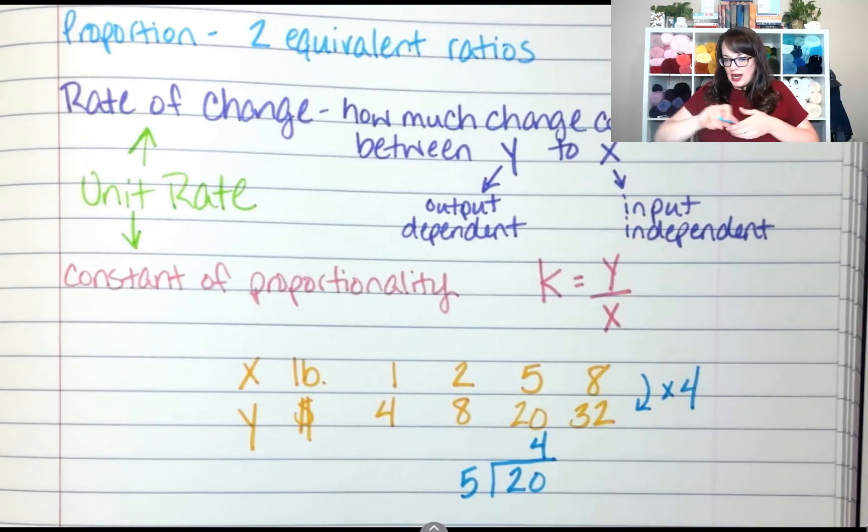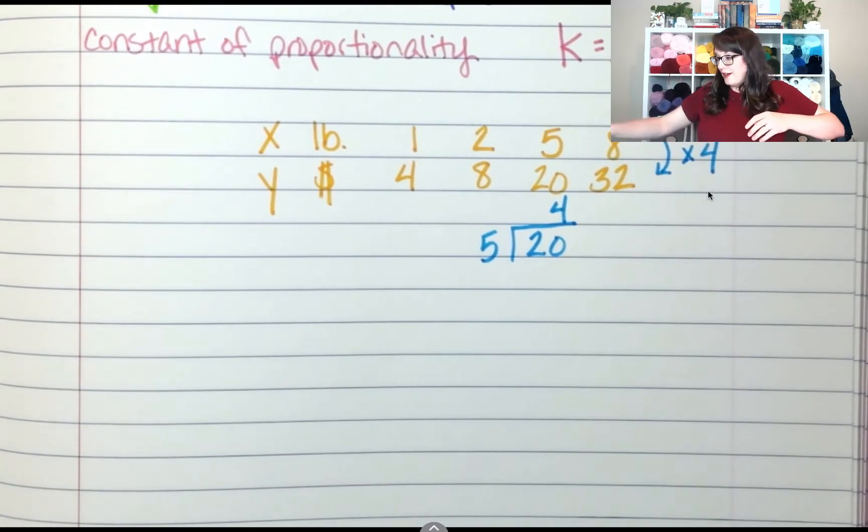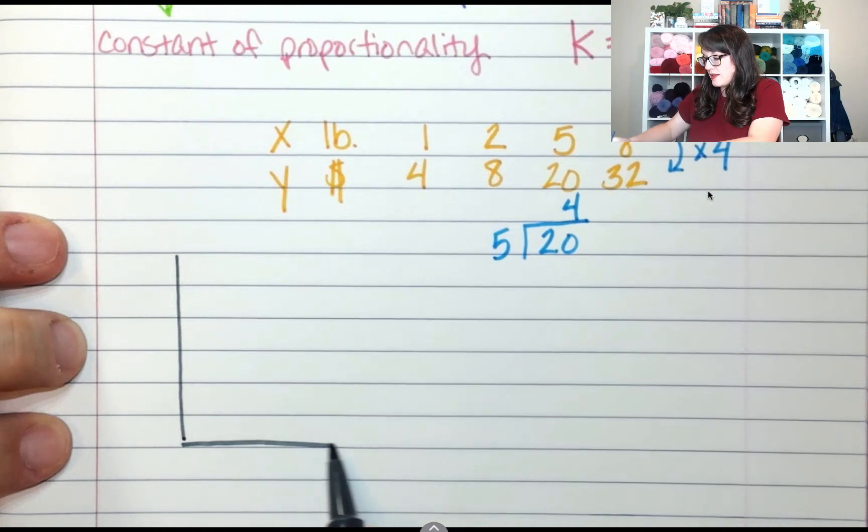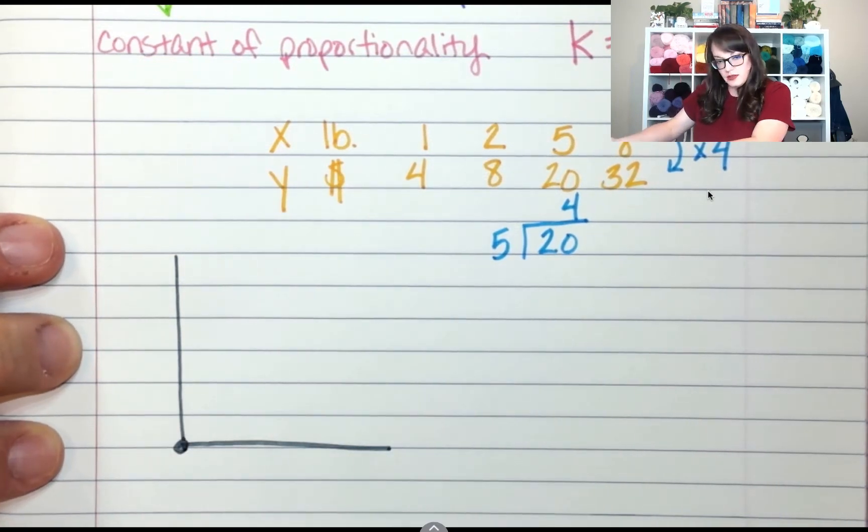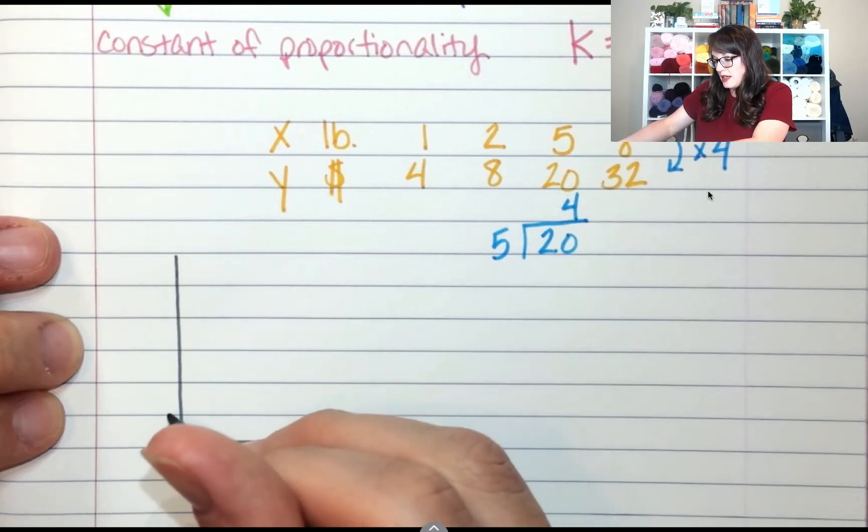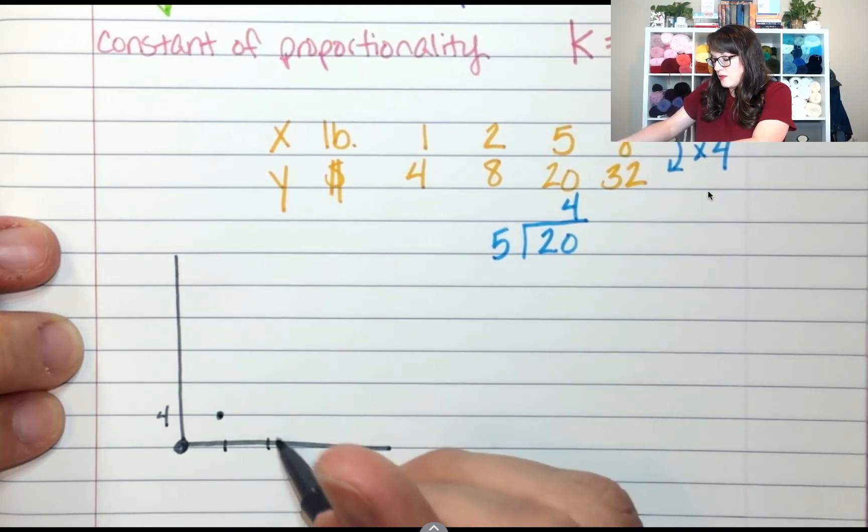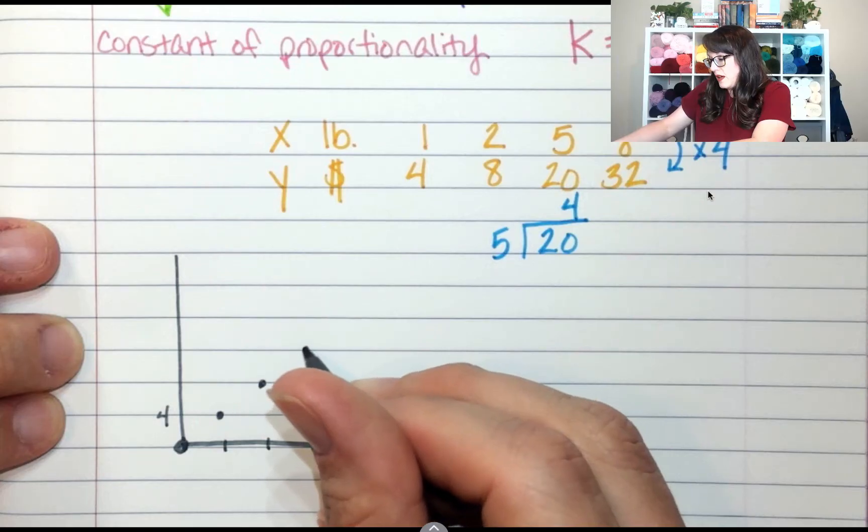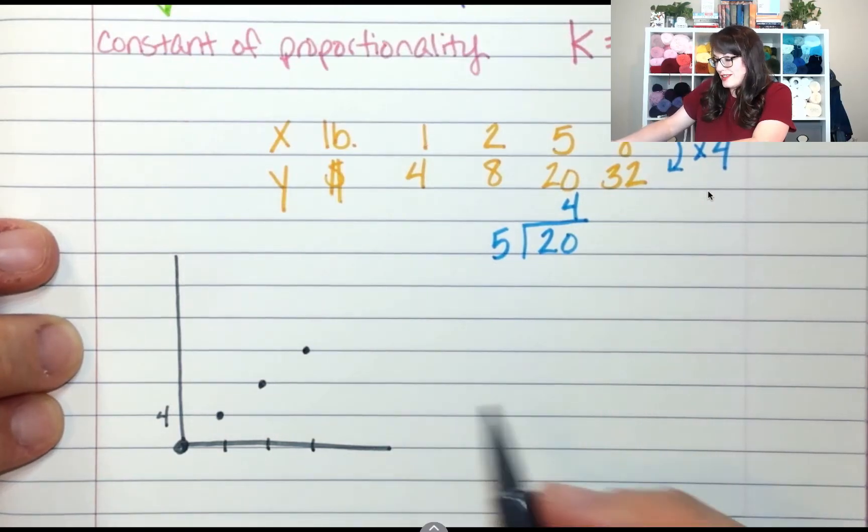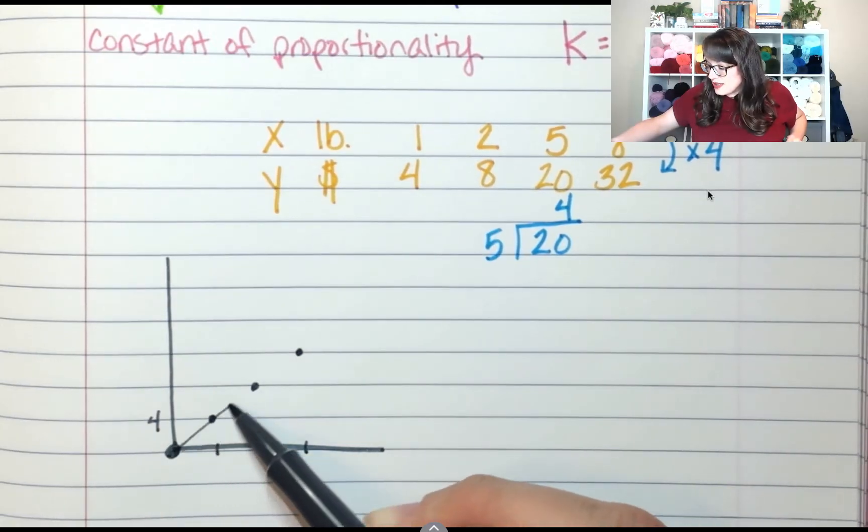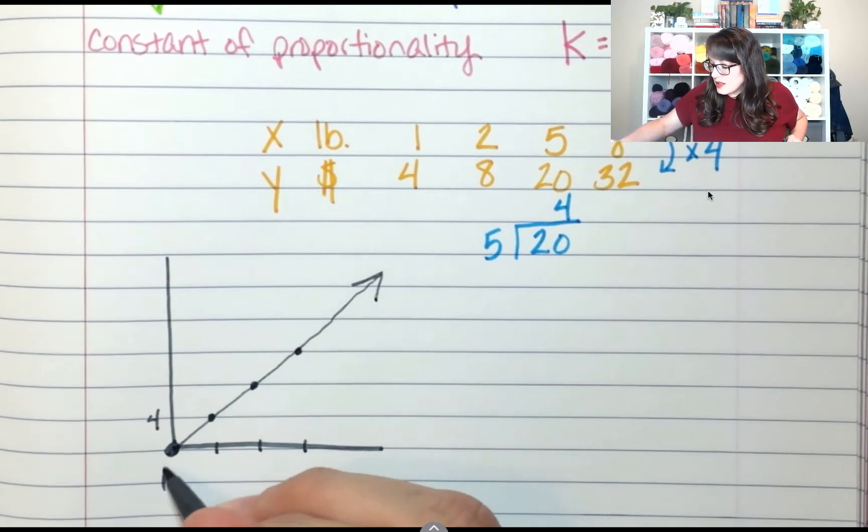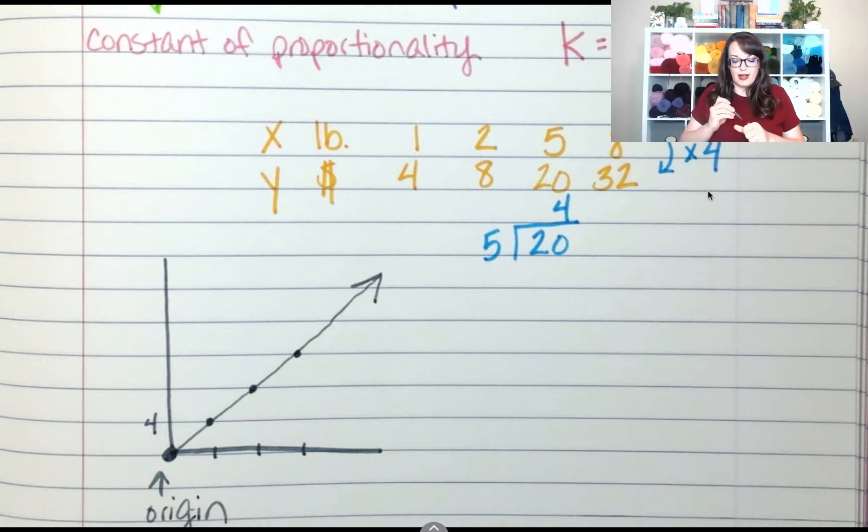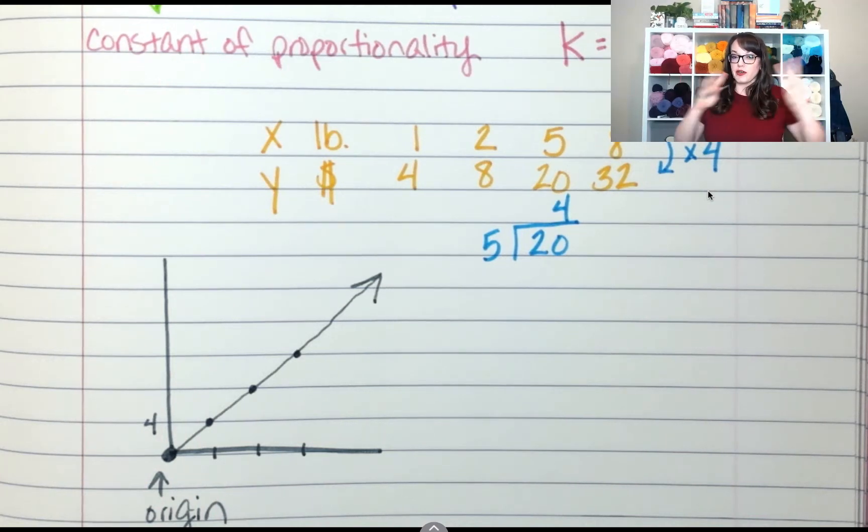If I put these on a graph almost done promise. If I put these on a graph you're going to get a straight line. So if I go to the store and I buy zero pounds of meat I pay zero dollars. If I buy one pound of meat I would pay four dollars. If I buy two pounds of meat I would pay eight dollars. If I buy three pounds of meat I would pay $12. So this line is straight. It would keep going and it goes through zero zero. So this is a proportional graph. Straight line goes through zero zero. That's it.